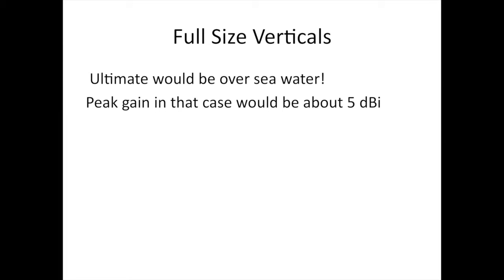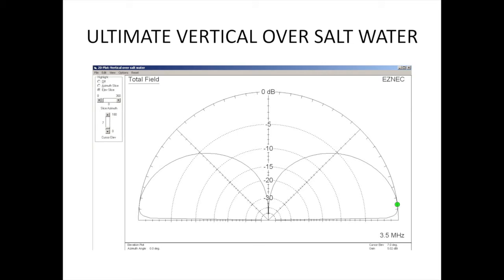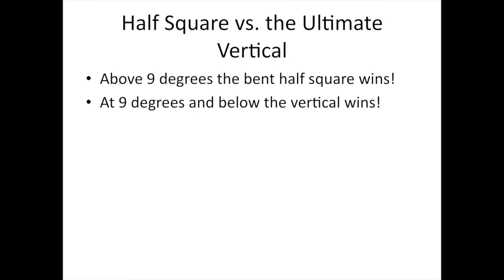Full size verticals. Ultimate would be over seawater. Peak gain in that case would be about 5 dBi. This shows the ultimate vertical over seawater with a very low angle, very low angle gain. And this shows my half square versus the ultimate vertical. The ultimate vertical wins at very low angles, if you can believe the EZNEC prediction on these ultimate verticals. Above 9 degrees, the bent half square wins. At 9 degrees and below, the vertical wins. Again, this is theoretical modeling.